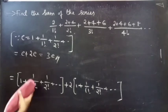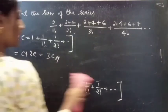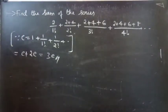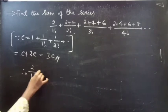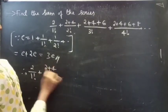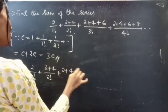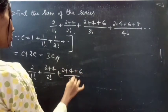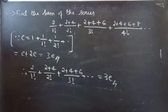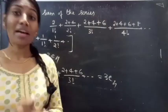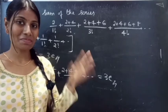Therefore the sum of the given series is 3e. That is 2/1! + (2+4)/2! + (2+4+6)/3! + so on = 3e. We have seen a problem from exponential series in this video. Hope you understand. See you in the next video. Bye bye.